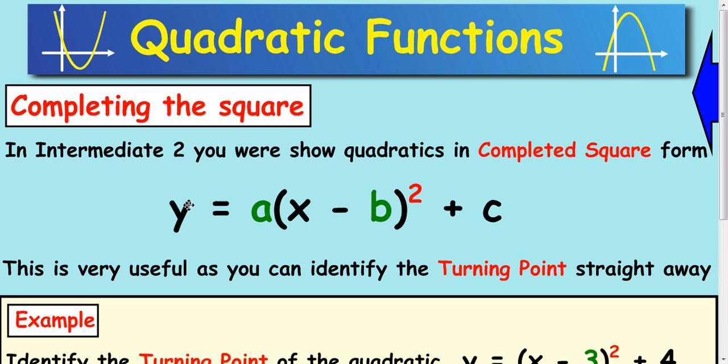But it's important to understand this form comes from the normal way you see a quadratic, i.e. ax² + bx + c. We can get from that to this.